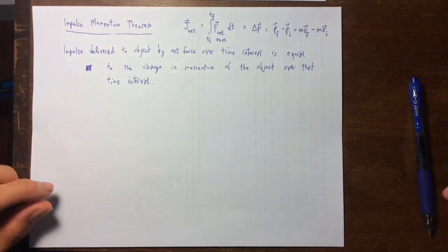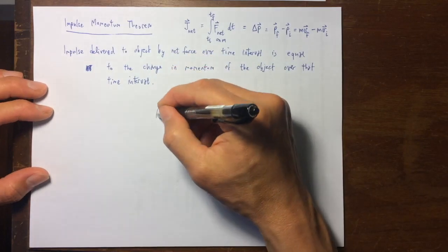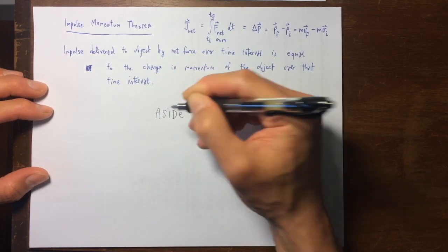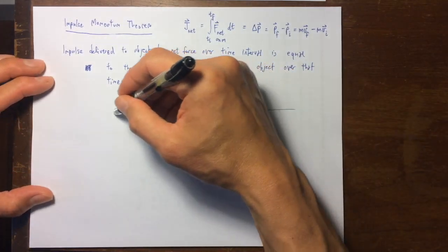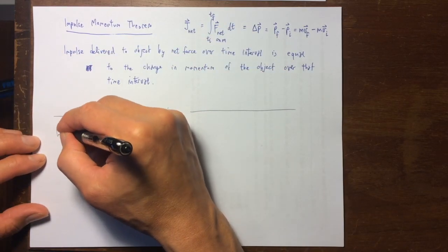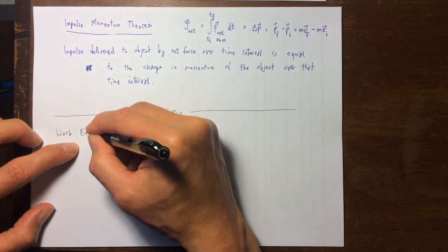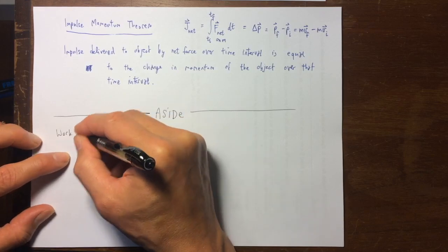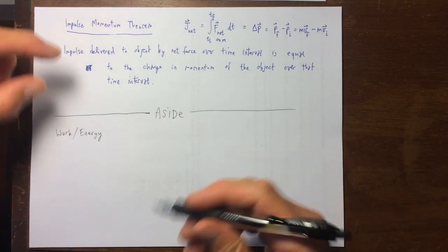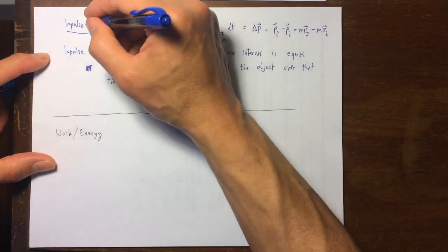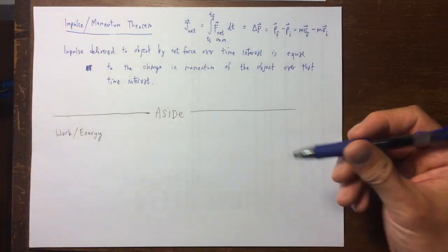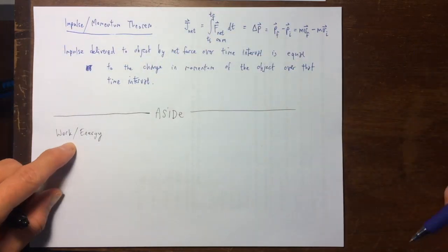So I wanted to put in an aside, and the aside is to remind you of what the work energy theorem looked like. This is the impulse momentum theorem, so I'm going to put a slash. It does not mean divide, it just means slash.